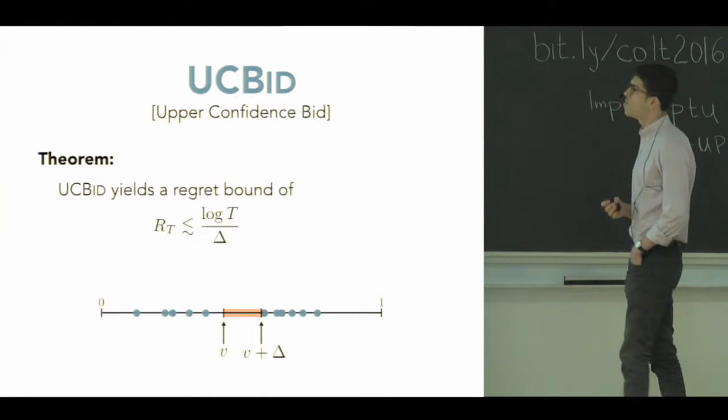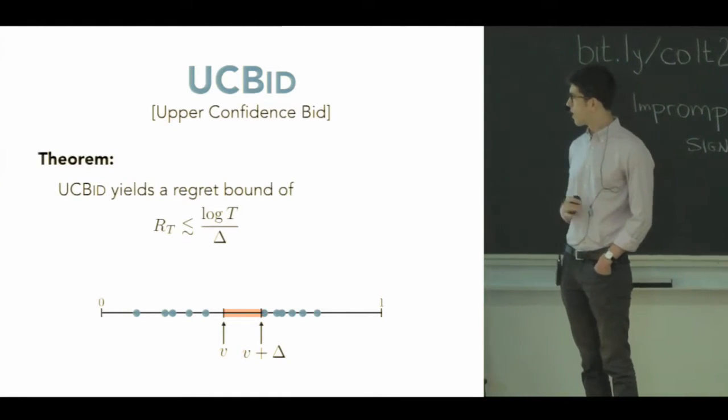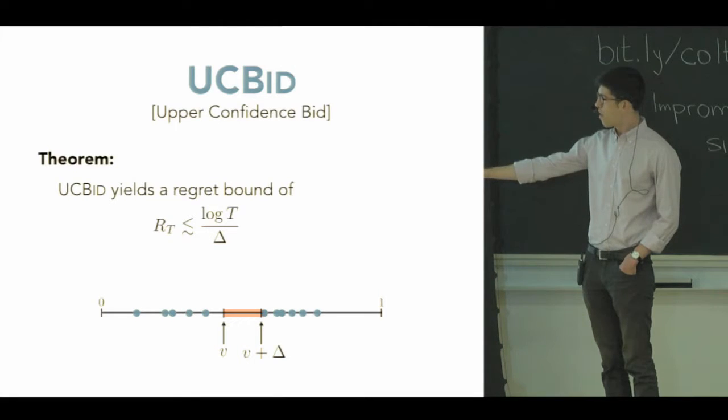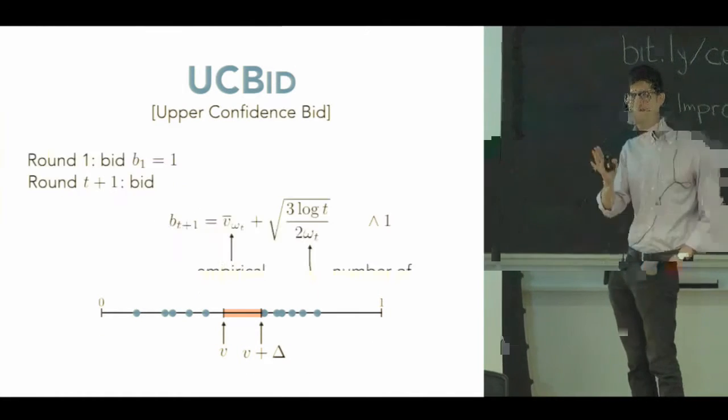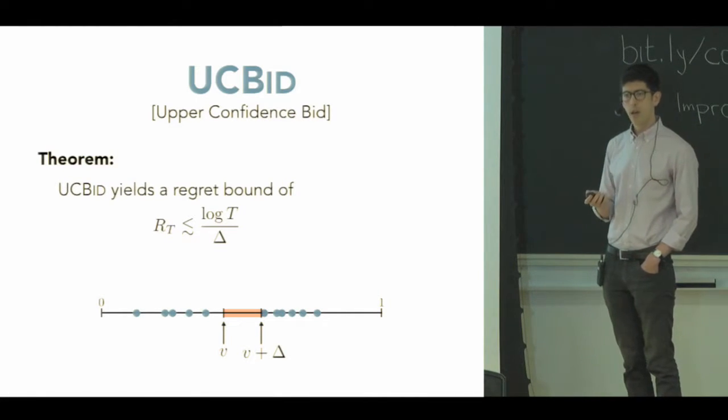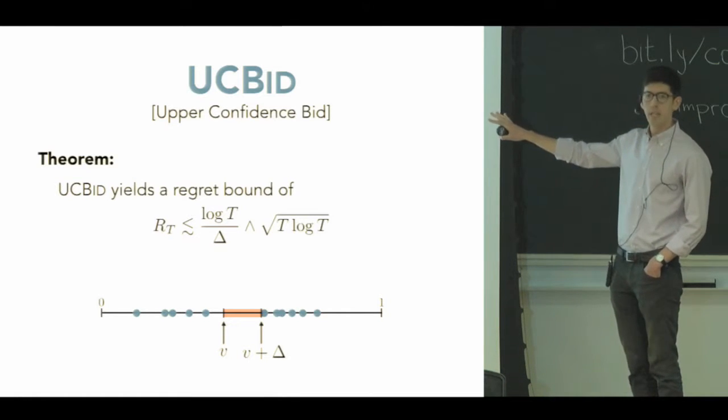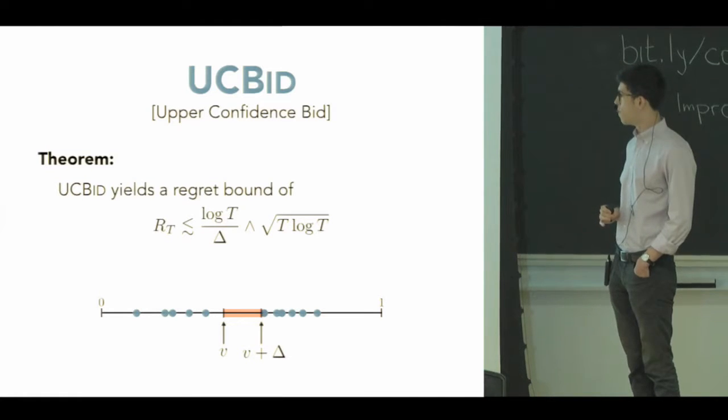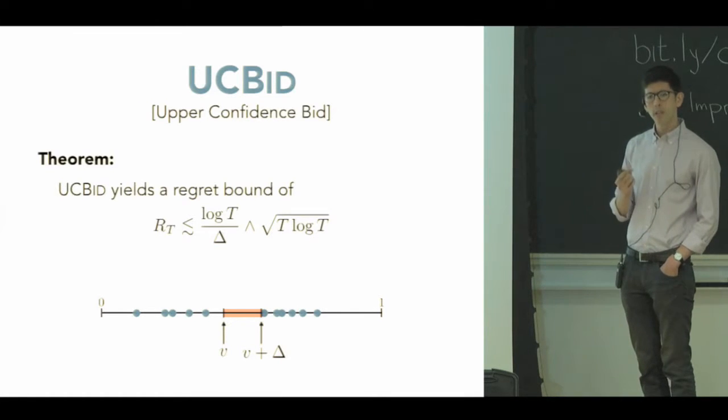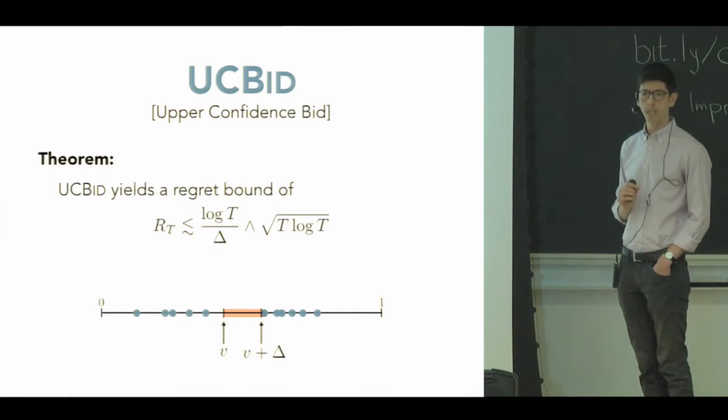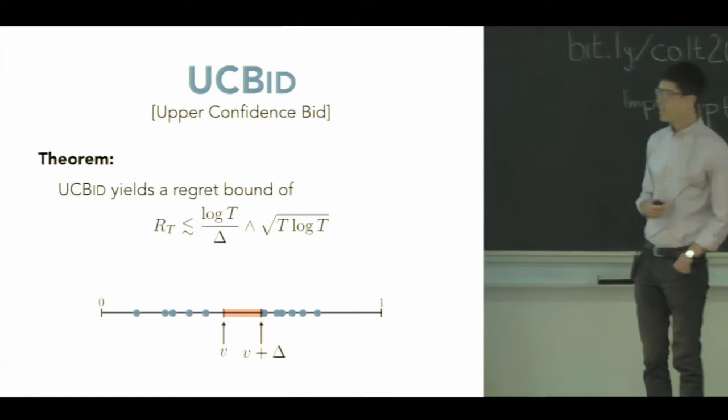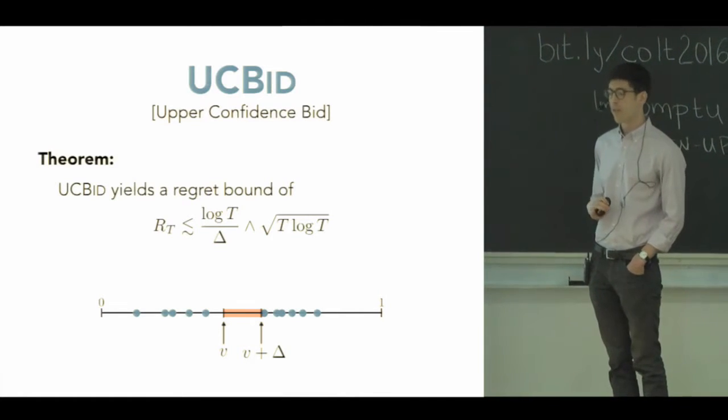What's the performance of this algorithm? Well, the theorem we have is that the UCBID algorithm yields a regret bound that looks like this. So the first term to understand is log T over delta. Delta is a width of an interval above the expected value such that the adversary's bids don't fall in that interval. This of course becomes vacuous as delta shrinks to zero. We also get the gap-free bound of root T log T. It's understandable that there should be some dependence here on this delta, because if the adversary is able to play slightly above the true expected value, get closer and closer to it every time, they can force you to consistently overpay for the item. So this log T over delta, you should understand the delta is appearing for that reason.